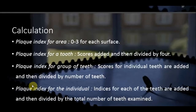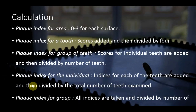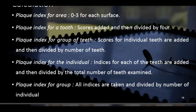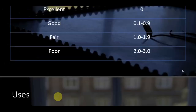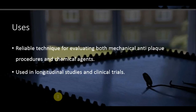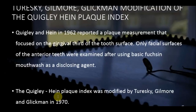Calculation: scores 0–3 are recorded for each of the four surfaces per tooth; individual tooth score = sum of four surface scores divided by 4. Plaque index for a group of teeth or individual = sum of all tooth scores divided by number of teeth examined. For a group: sum of all individual indices divided by number of individuals. Interpretation: Excellent = 0; Good = 0.1 to 0.9; Fair = 1.0 to 1.9; Poor = 2.0 to 3. The Plaque Index is a reliable technique for evaluating mechanical and chemical anti-plaque procedures and can be used in longitudinal studies and clinical trials.